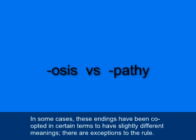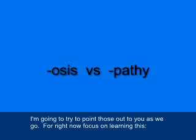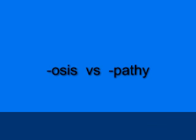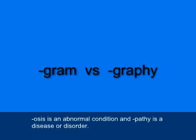In some cases these endings have been co-opted in certain terms to have slightly different meanings — they're exceptions to the rule — and I'm going to try to point those out as we go. But for right now, focus on learning this: OSIS is an abnormal condition, and PATHY is a disease or disorder.